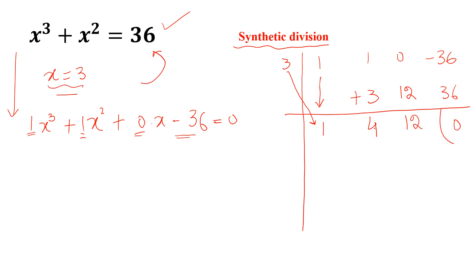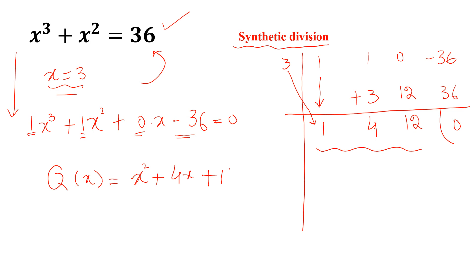The quotient is x square plus 4x plus 12.